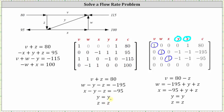Because y and z are the free variables, we need to express v, w, and x in terms of y and z. For the first equation, we subtract z from both sides. For the second equation, we add y and z to both sides. For the third equation, we again add y and z to both sides, giving us our final solution to the flow rate problem.